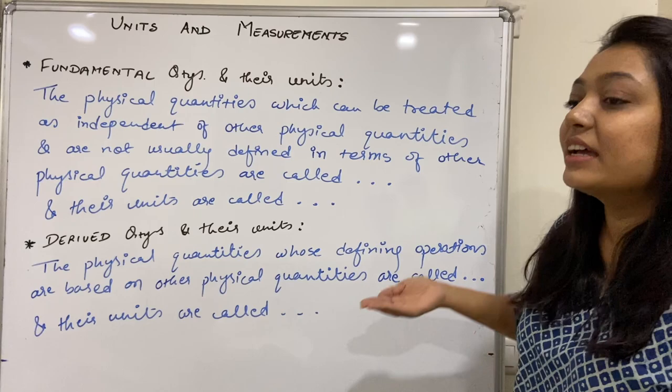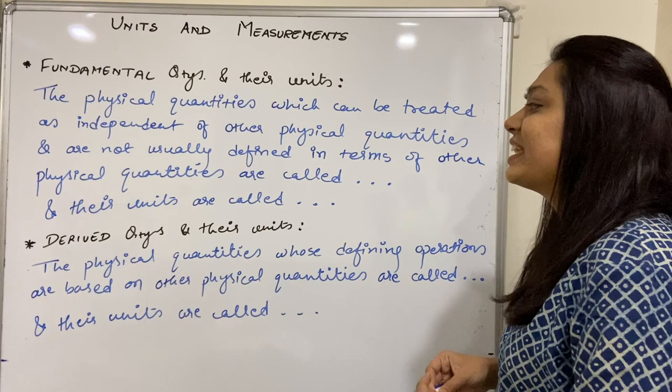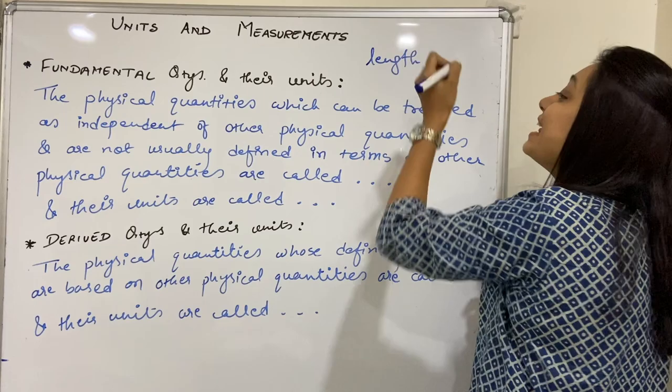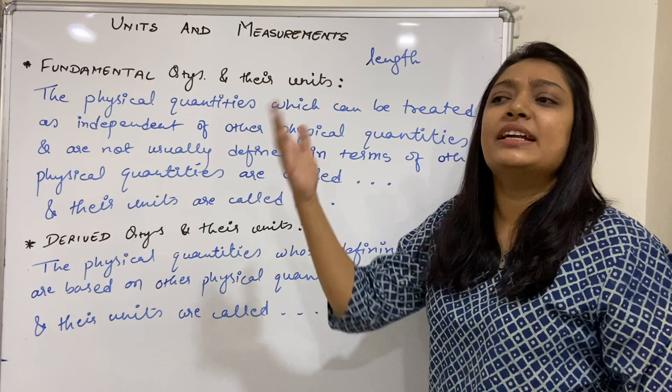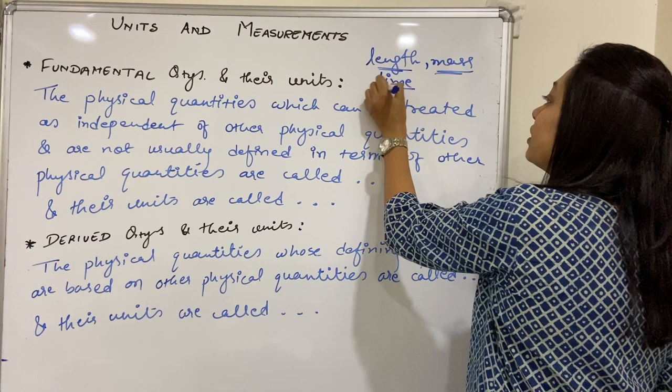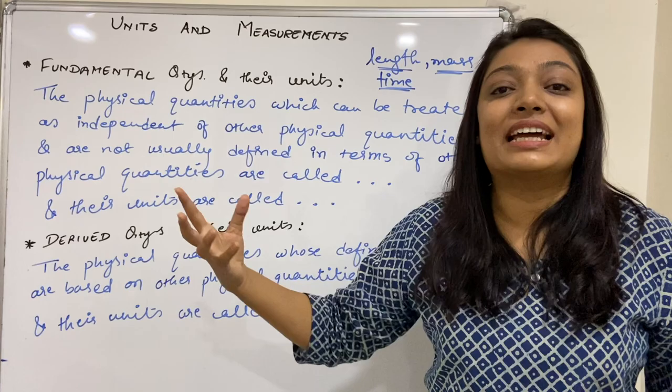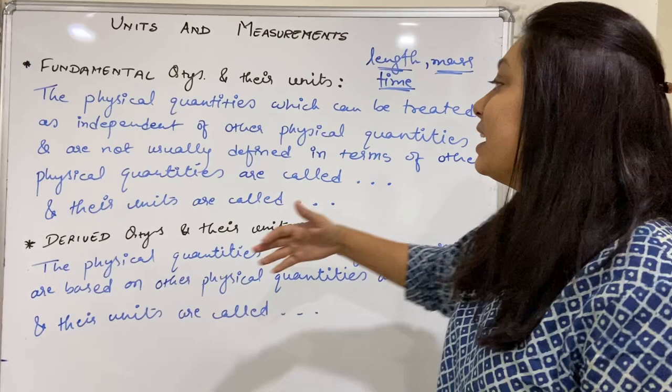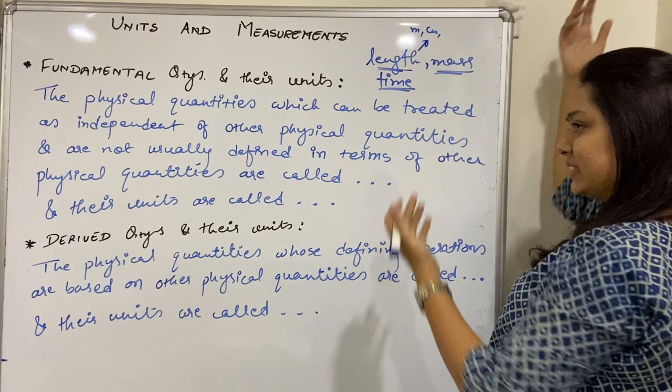Chalo — examples se kaise pata chalega kya hai fundamental quantity ya kya hai derived quantity? Sabse pehle, we can understand that length is something fundamental — usse base kya hai, distance measure karne ke liye, height measure karne ke liye. So length is one of the fundamental quantities. Doosra: mass. Third is time. Yeh saari cheezein — length, mass, time — they fall in the category of fundamental quantities. Length measure hota hai meter mein, centimeter mein, etc. — bahut saari units hain uske.